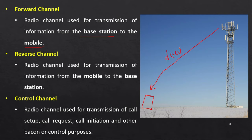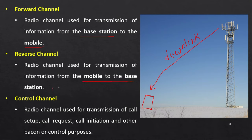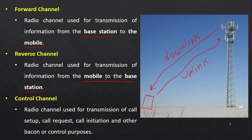The forward channel, or downlink, goes from the base station to the mobile station. Remember, this is not a physical channel — we are allocating a frequency for communication purposes, making it a logical channel. Similarly, the reverse channel, also called the uplink, is a radio channel used for transmission of information from the mobile station to the base station.